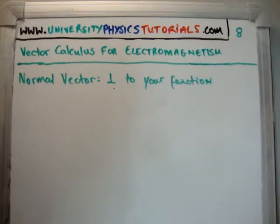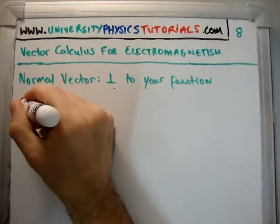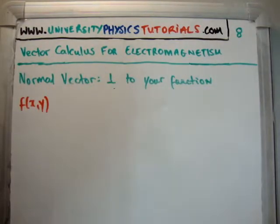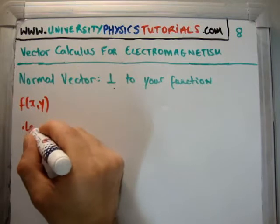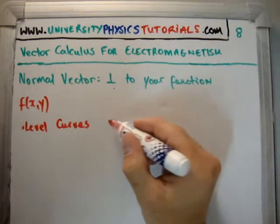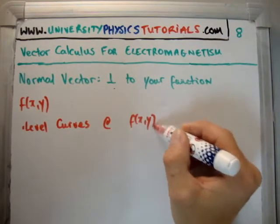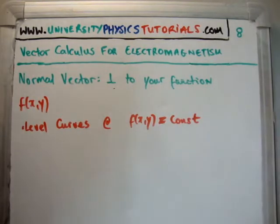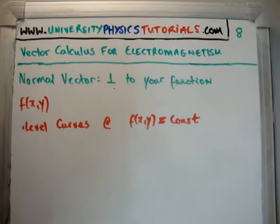We're going to talk about the normal vector more carefully now. We'll only consider two dimensions, x and y — f is a function of x and y. We're going to define level curves: level curves occur at f(x, y) equal to a constant. That should make sense because the function isn't changing — the derivatives are zero on a level curve.